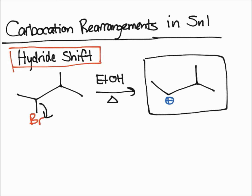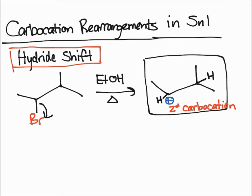We'll disregard the bromine for now. Remember, there are implied hydrogens here, and we have one hydrogen there. As you can see, the positive charge — the carbocation — is a secondary carbocation. But we can do one better than that: a tertiary carbocation is the most stable carbocation, and there's a way that can form.